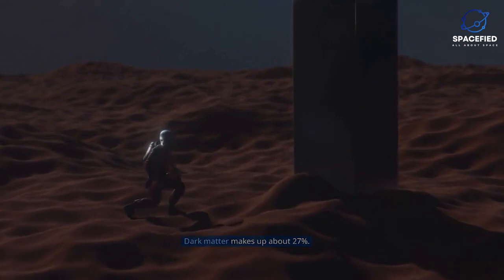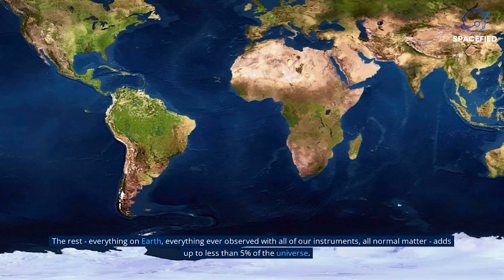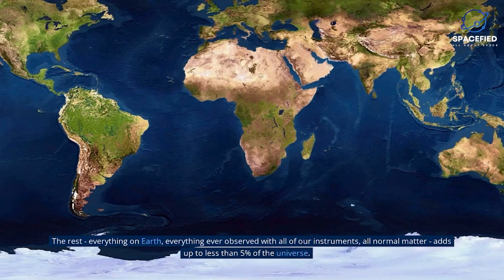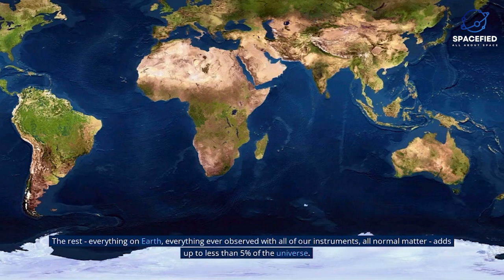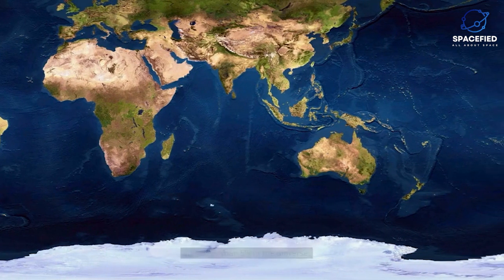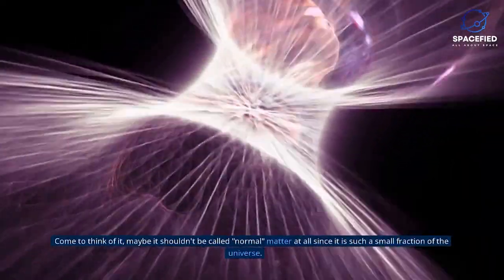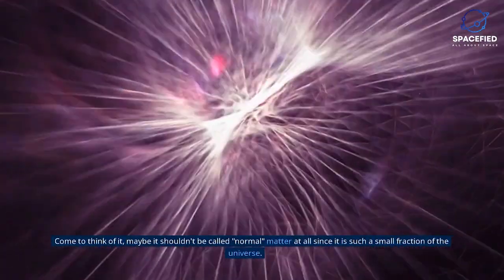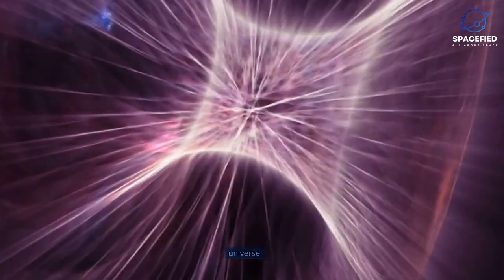Dark matter makes up about 27%. The rest, everything on Earth, everything ever observed with all of our instruments, all normal matter, adds up to less than 5% of the universe. Come to think of it, maybe it shouldn't be called normal matter at all, since it is such a small fraction of the universe.